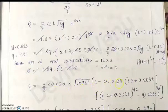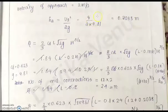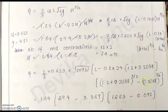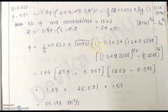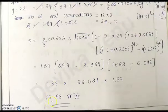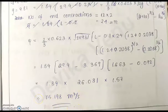Substituting all the given data into the equation carefully — effective length 29.4, N = 24, H = 1.2, H_A = 0.2038 — the discharge considering both N contraction and velocity of approach is found to be 75.198 cubic meters per second. I hope this question is clear to you.